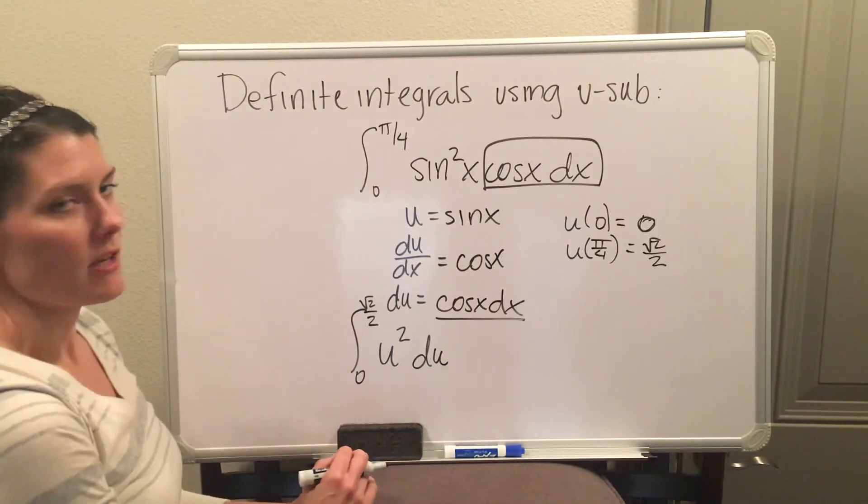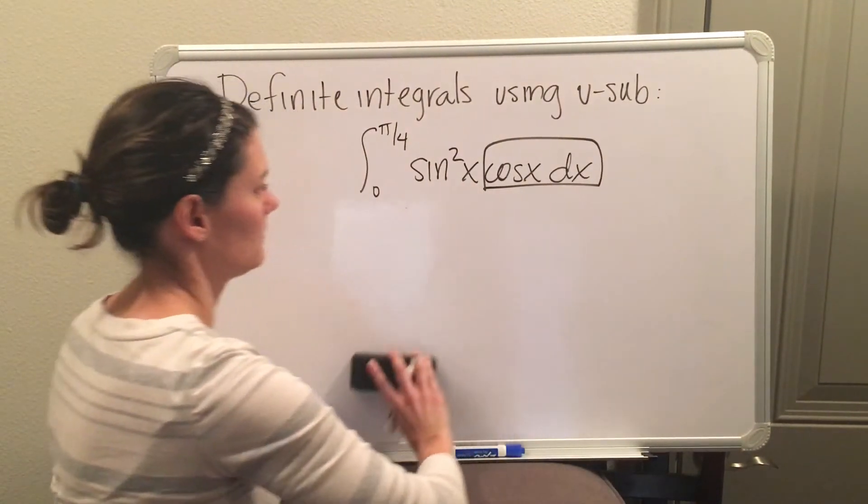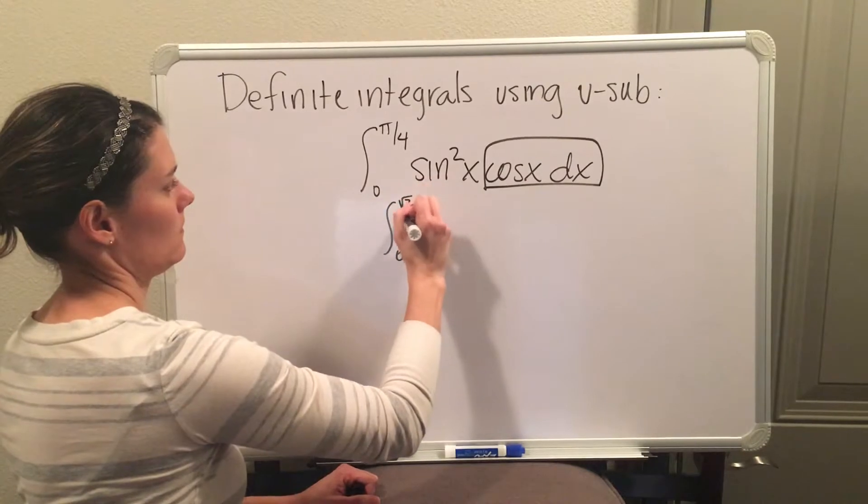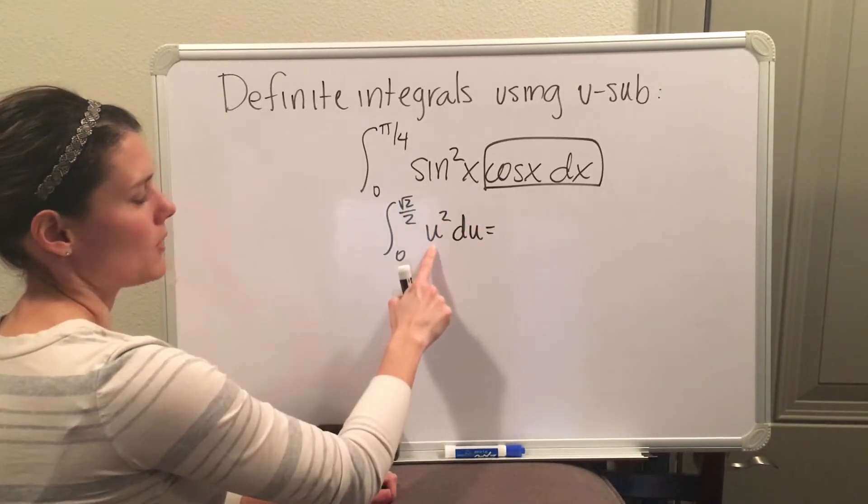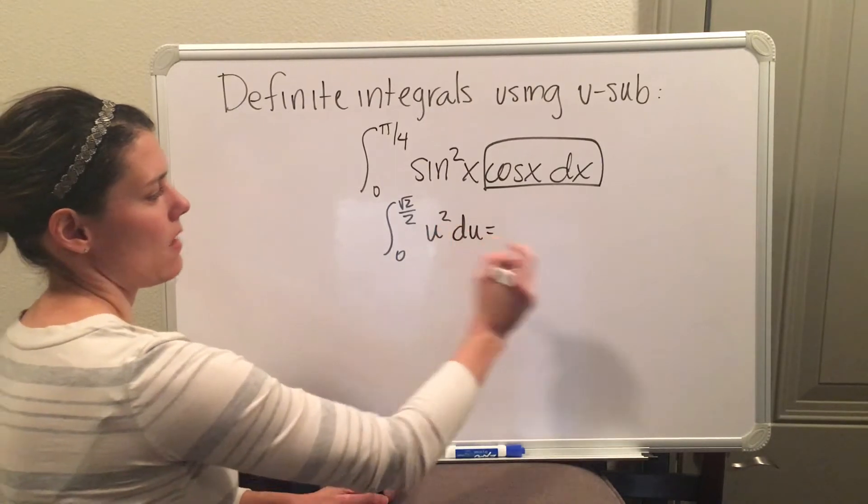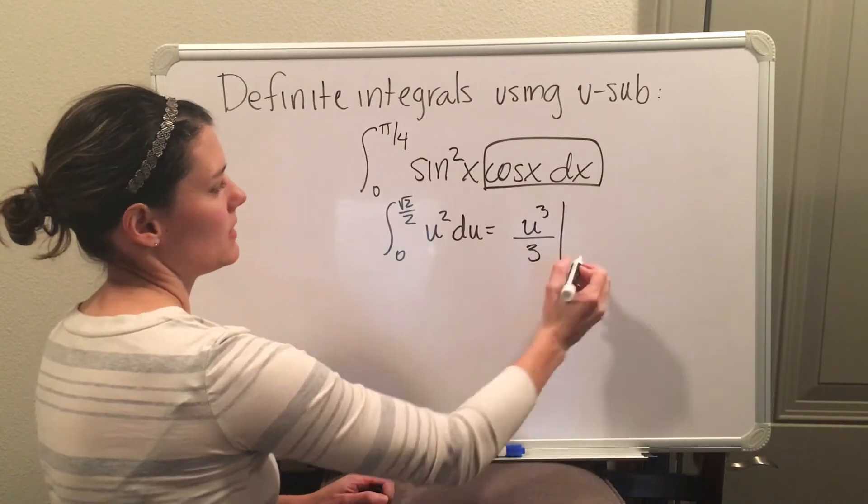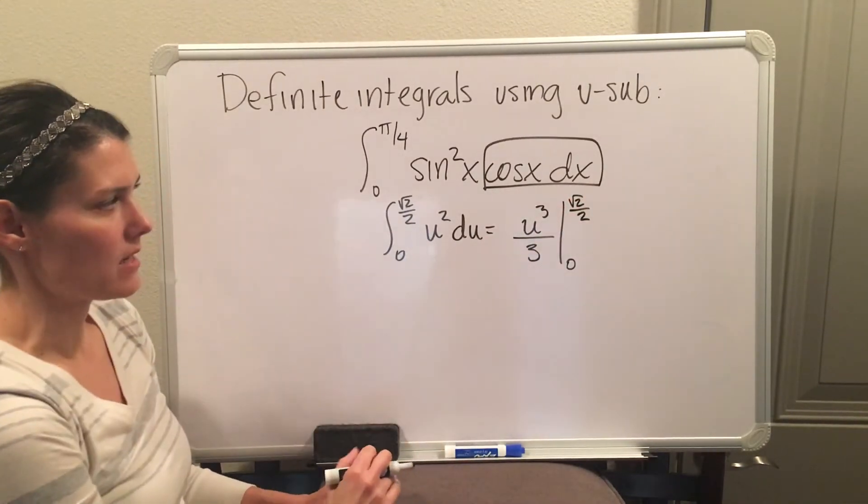After you get here, now you're ready to integrate and apply the FTC. I'm going to use the power rule. So u to the power of 2, I'm going to add 1 and then divide by it. But instead of putting a plus c, I'm going to go ahead and write my vertical bar with the a and b on there.